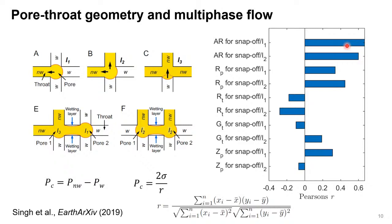This is from one experiment, so we need more experiments to generalize. We conducted another experiment in February before lockdown on a Bentheimer sandstone sample. We analyzed the data to see if we can get similar results on a different rock.